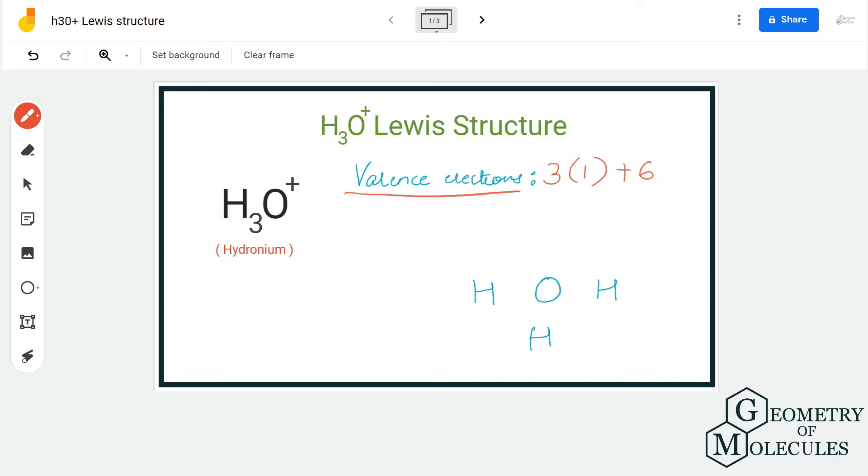We are going to minus the electron that the ion is losing. Whenever there is a plus charge, it means the ion is giving away one electron. When there is a minus charge, it means it is accepting an additional electron. So here, as it is giving away one electron, we are going to subtract that.